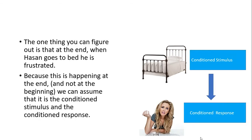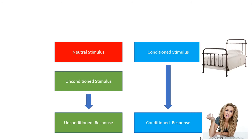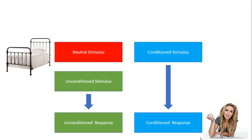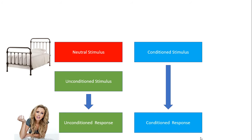So now what you're going to try to do is figure it out backwards. You have to know that your neutral stimulus and your conditioned stimulus are always the same thing, specifically if the classical conditioning worked. Your unconditioned response and your conditioned response are also always going to be the same thing. So if you know that the bed is the conditioned stimulus, then you also know what your neutral stimulus is — the bed. It has to be; there's no other option. And if you know that the conditioned response is that she feels frustrated, then you know that also has to be the unconditioned response.